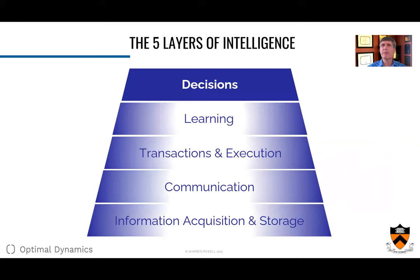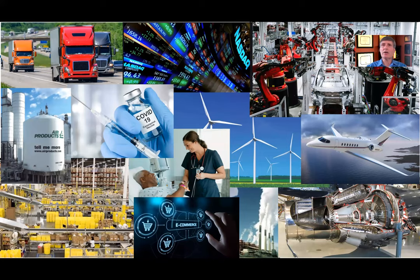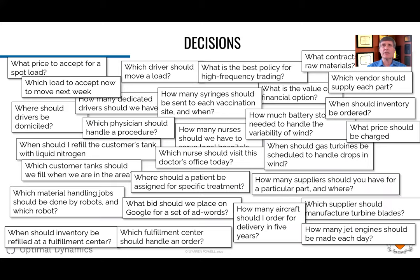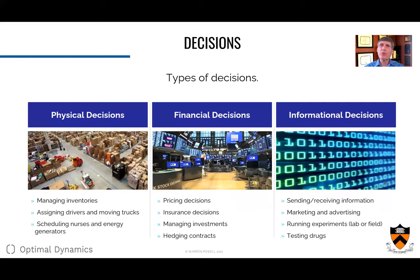Now we get to the top layer: decisions. Behind all of these problems are humans making decisions — all kinds of decisions. There are three broad categories: decisions that impact physical resources, such as inventories, moving a truck, or scheduling nurses and energy generators; financial decisions of managing financial assets; and informational decisions of sending and receiving information, marketing and advertising, and testing drugs as a form of information decision.